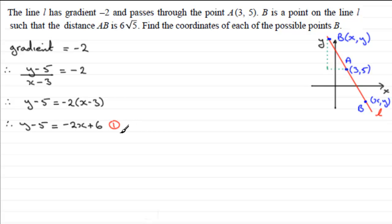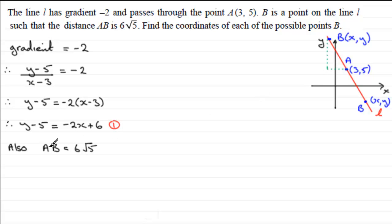We've got two unknowns, so we need another equation. We're going to look at the length AB. We're told AB equals 6 root 5. We need to think about using Pythagoras' theorem, because it's the distance between two points. AB squared equals (6 root 5) squared. That's 36 times 5, which is 180. So AB squared equals 180.